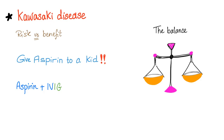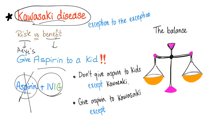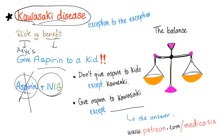Kawasaki disease: risk versus benefit analysis. The risk is that aspirin can lead to Reye's syndrome. The benefit is that aspirin protects the child against coronary artery thrombosis. So in most cases, it's safe to give aspirin to a Kawasaki disease patient — aspirin plus IVIG. There are only one or two exceptions when not to give aspirin to the Kawasaki disease child.